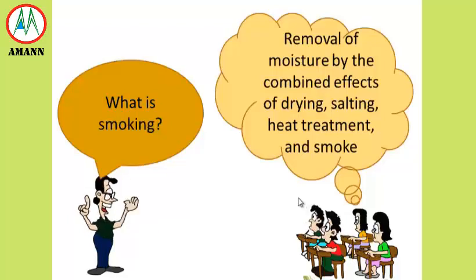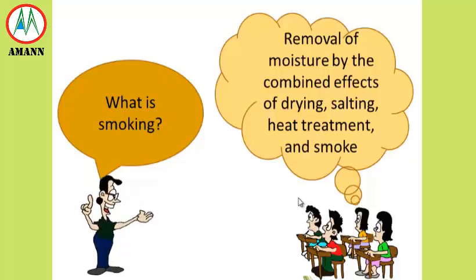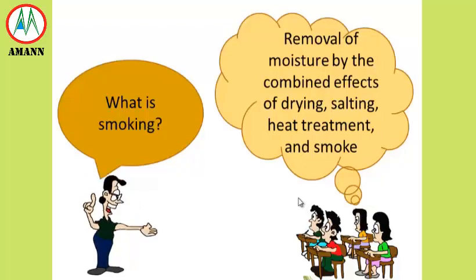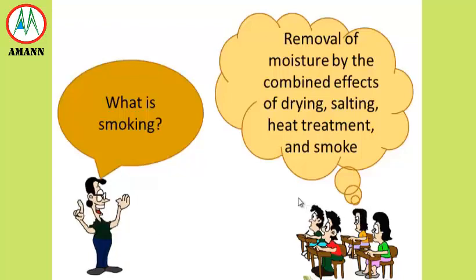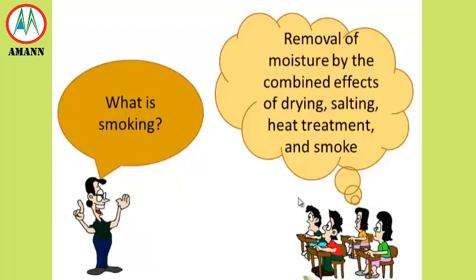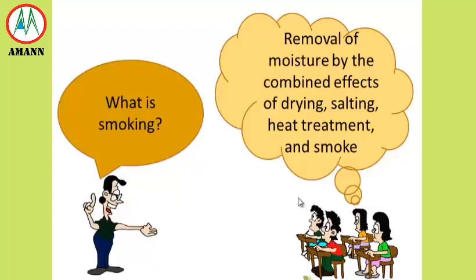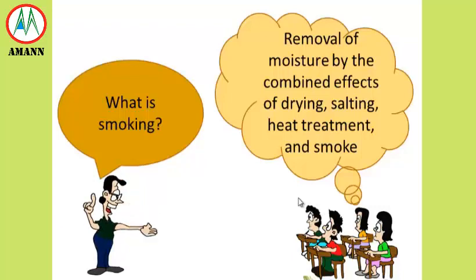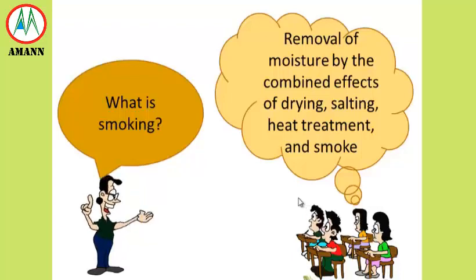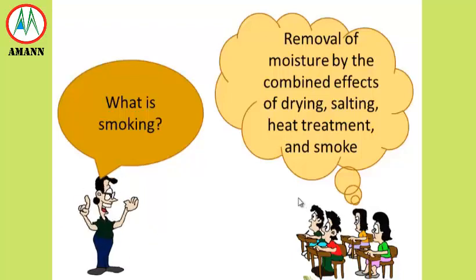Smoking preserves fish through the combined effects of drying, salting, heat treatment if it is pre-cooked, and the deposition of chemicals produced from the burning of wood.